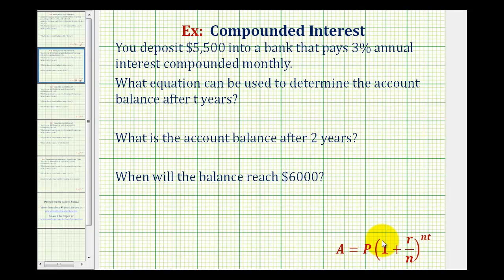You deposit $5,500 into a bank that pays 3% annual interest compounded monthly. What equation can be used to determine the account balance after two years? What is the account balance after two years? And when will the balance reach $6,000?